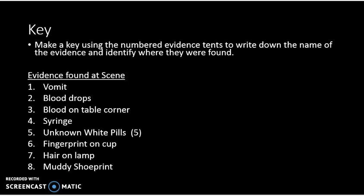When you go out to the scene, pay attention to the evidence tints and what they're actually pointing to. Make sure you update your key as well. Number one was vomit. Two were the blood drops between the head and the corner of the table. Number three was the blood on the actual table. Four was an empty syringe. Five were the five white unknown pills — important to note that they were pills and not crushed or powdered. Six was a cup of spilled liquid, and the fingerprint on the cup is what number six refers to. Hair on the lamp was number seven. And the muddy shoe print was number eight.